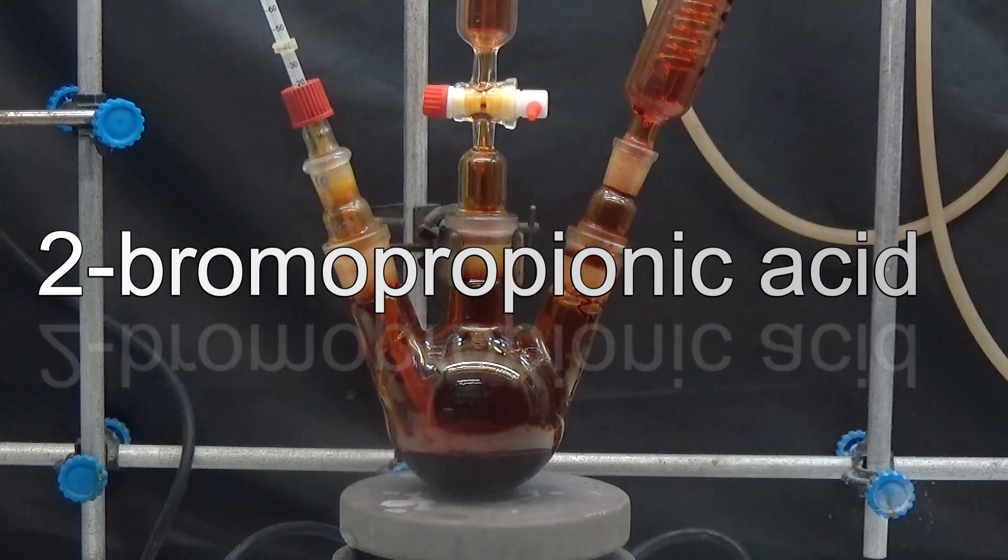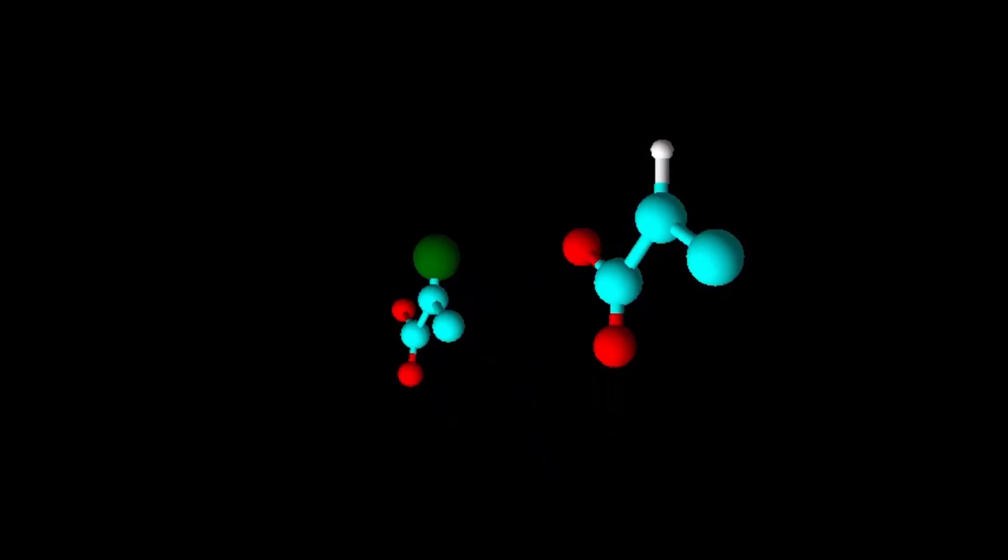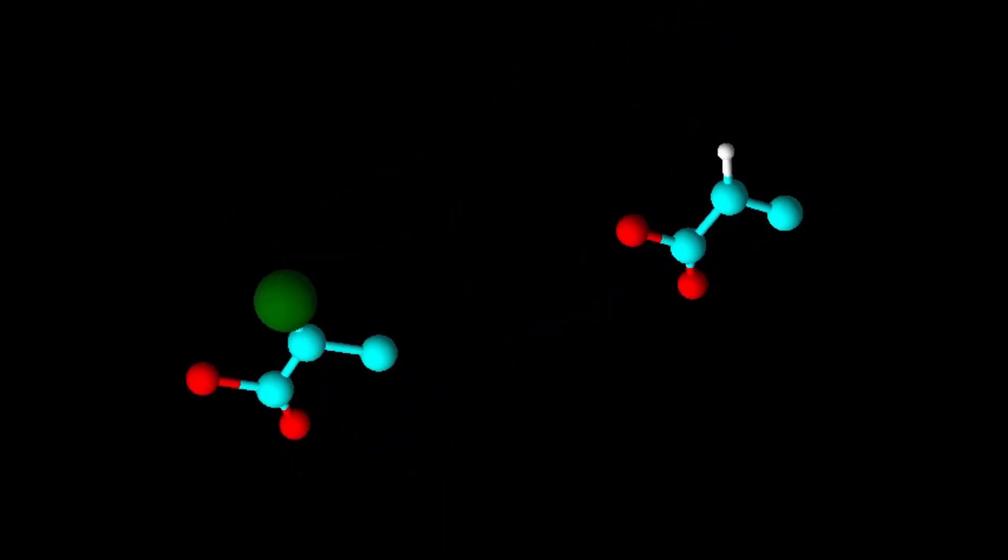In this video, we will learn how to obtain 2-bromopropionic acid. 2-bromopropanoic acid is obtained by introducing a bromine atom into the alpha carbon and replacing it with hydrogen.